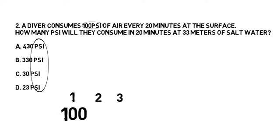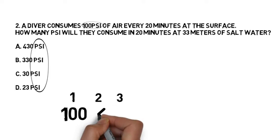Now we need to think about whether we multiply or divide — always the tricky part. Using your scuba knowledge, you know that as you go deeper you breathe through your air faster, because you're breathing more air with every breath. So you'll breathe more PSI at 33 meters than you would at the surface in the same amount of time. We want an answer that is more than 100 PSI, so it's a multiply question.